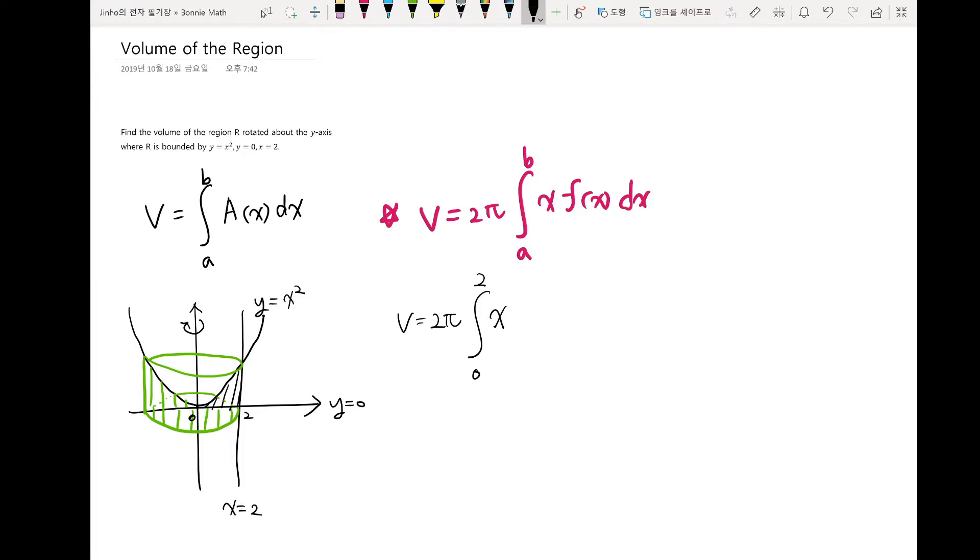So V is equal to 2π integral from 0 to 2, times x. And our height becomes this graph, which is y equal to x square. So x square dx.